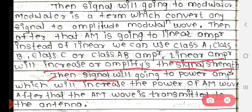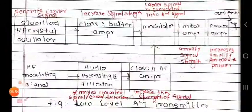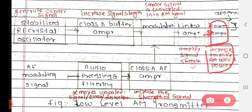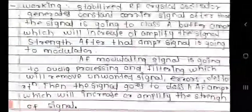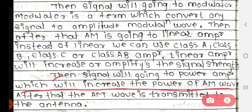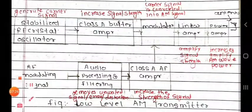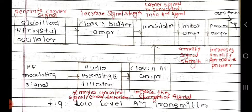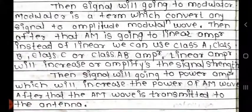Then the signal goes to the power amplifier, which will increase the power of the AM wave. After that, the AM wave is transmitted to the antenna. This is the detailed explanation of the low level amplitude modulation transmitter. Thank you.